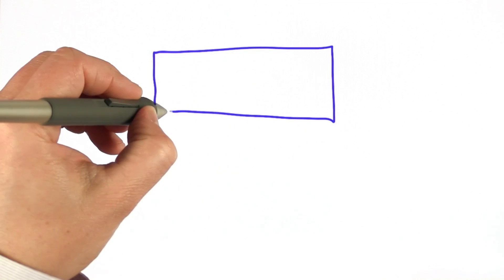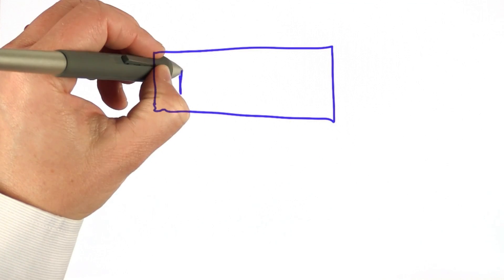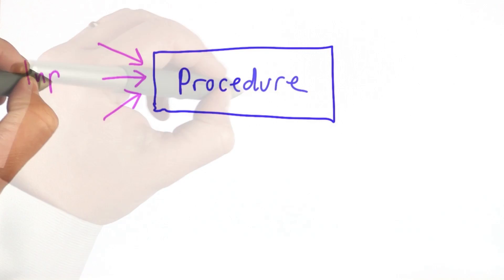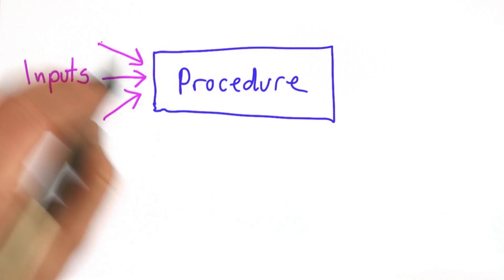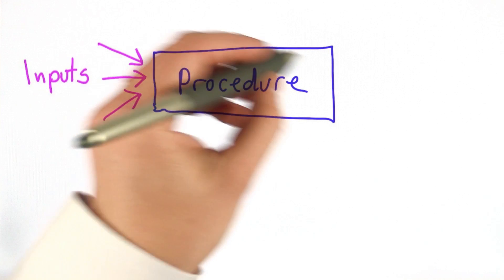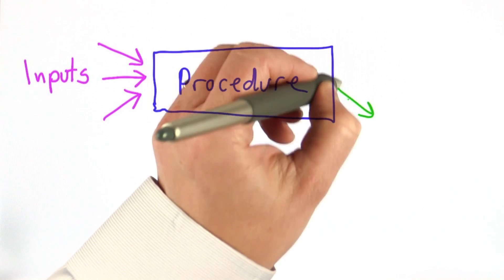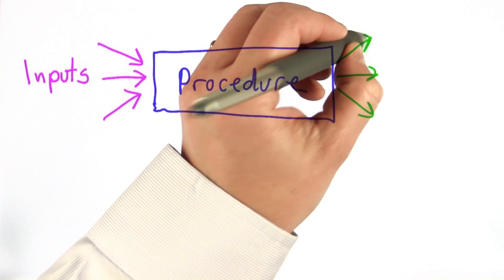So the way to do that is what we call a procedure. And a procedure is something that takes inputs in, there can be more than one, does some work on those inputs, and produces outputs as results.